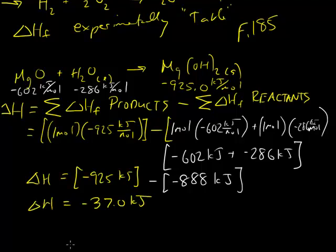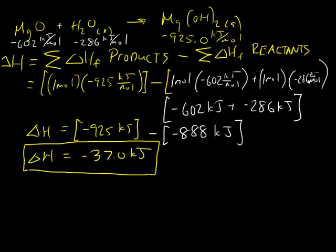And that is known as the heat of reaction for magnesium oxide plus liquid water making magnesium hydroxide. And that is how to find the energy change for a chemical reaction given the heat of formation data. Let's look at a second example.